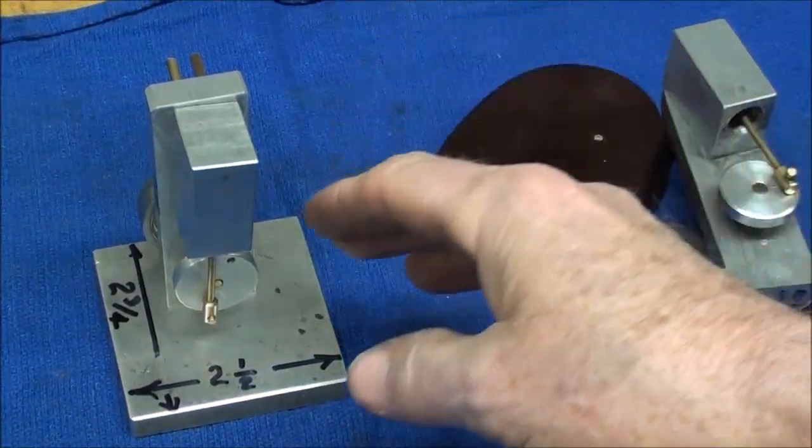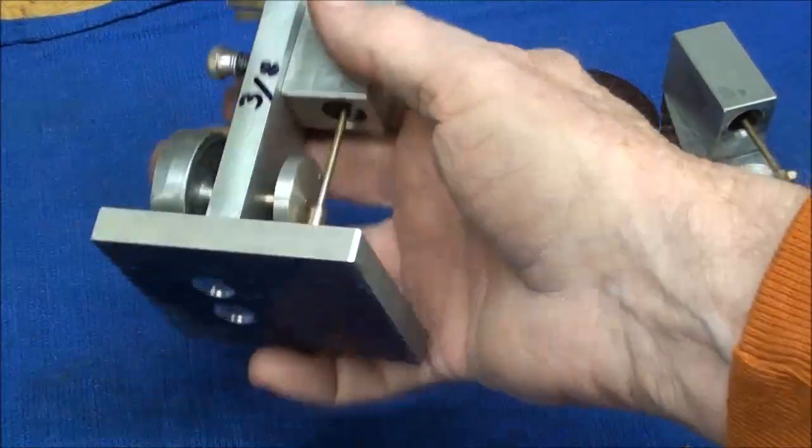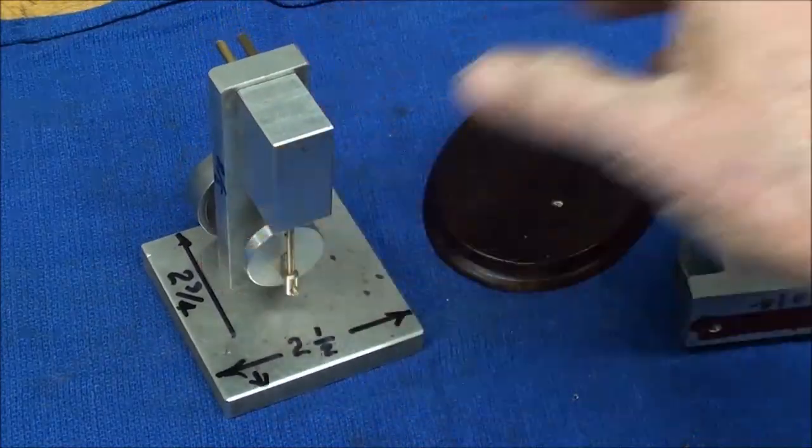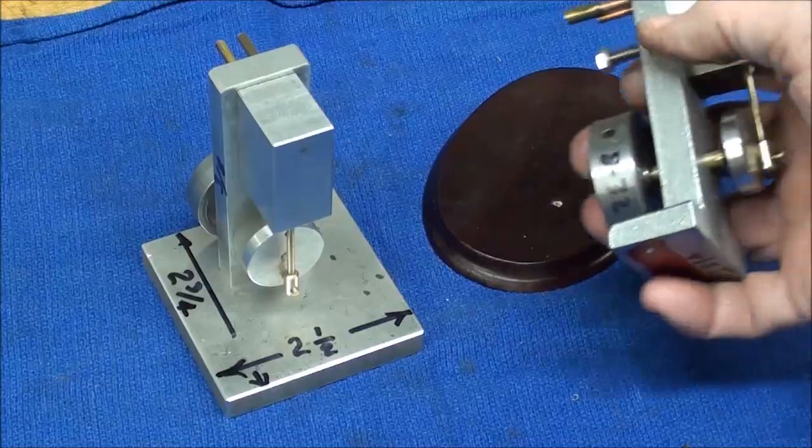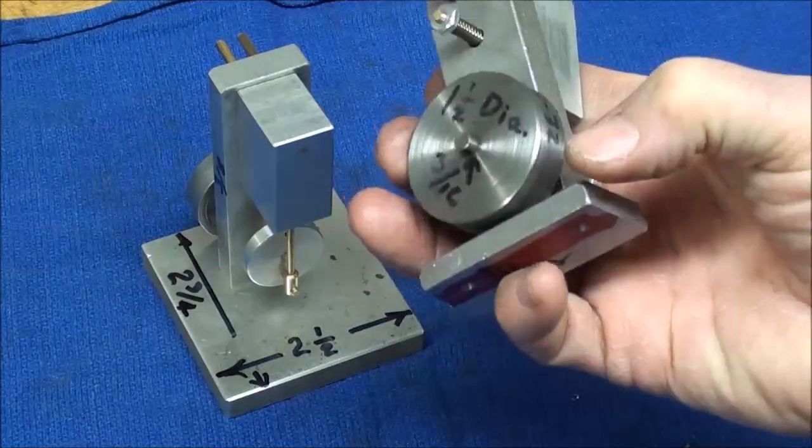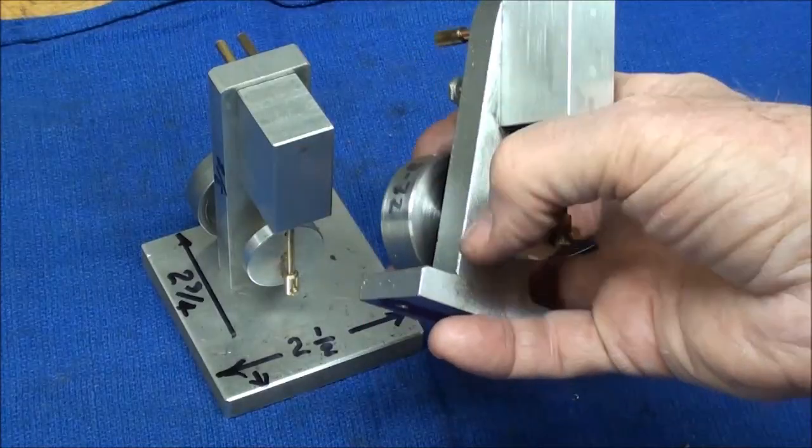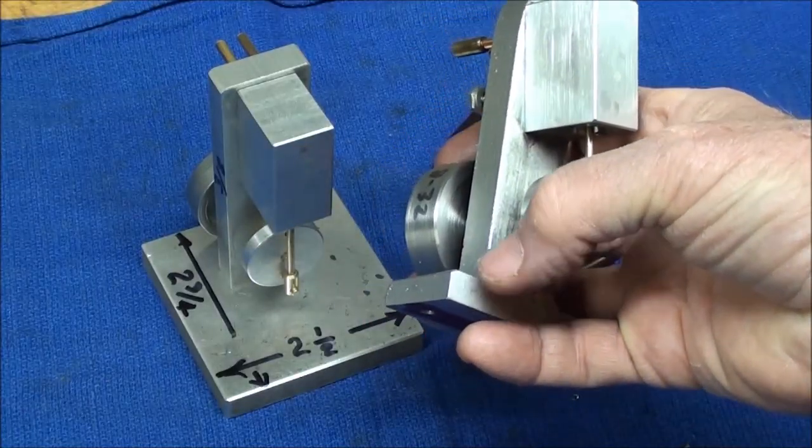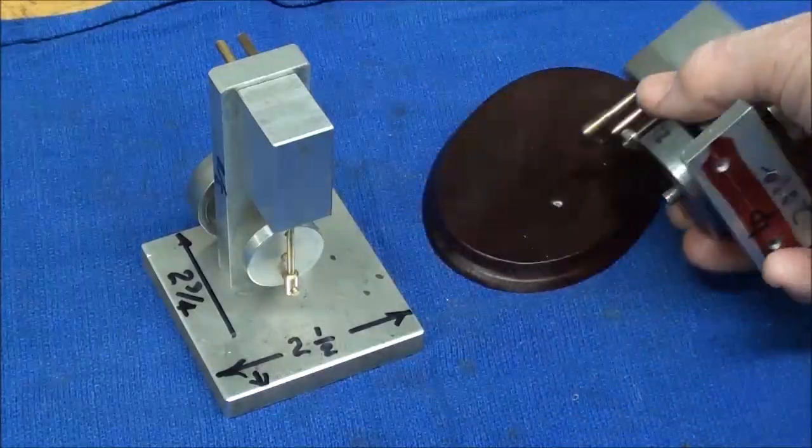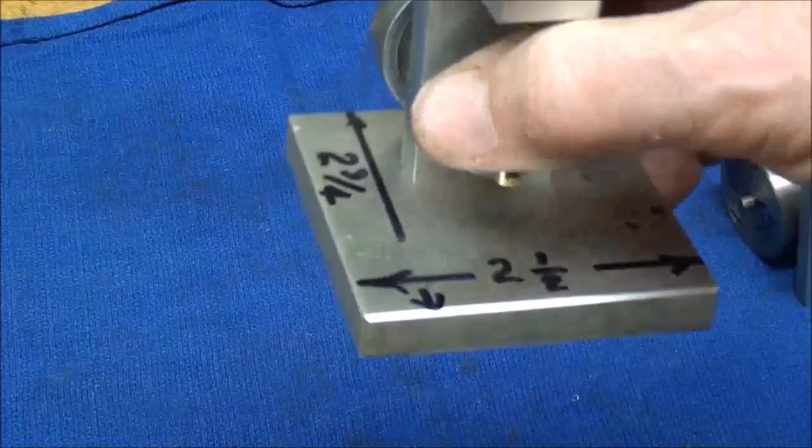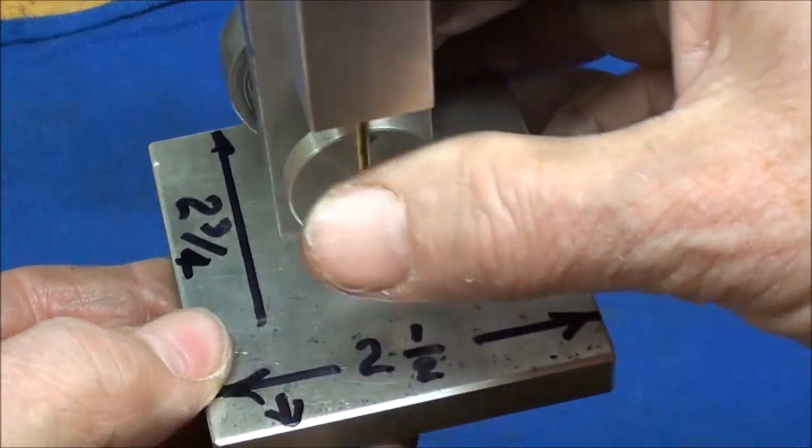Now if you remember from part one, I actually built two engines. This one was off-camera, it was just the prototype, but the final one that I made was done with a casting. Now you're not going to be able to make a casting probably, so you'll want to make it out of bar stock. So why don't you make the base and the pedestal like this one.